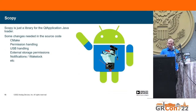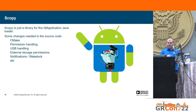In the end, we managed to build everything. Scopey is just a library for the Qt application loader. There were a few changes needed in the CMake project to make CMake aware that we're building for Android, but the rest of the modifications were just interactions with the Android API — stuff like permission handling, USB handling, and notifications. Scopey creates a notification when you send it to sleep but the device is still running, to tell you the device might be draining your battery.